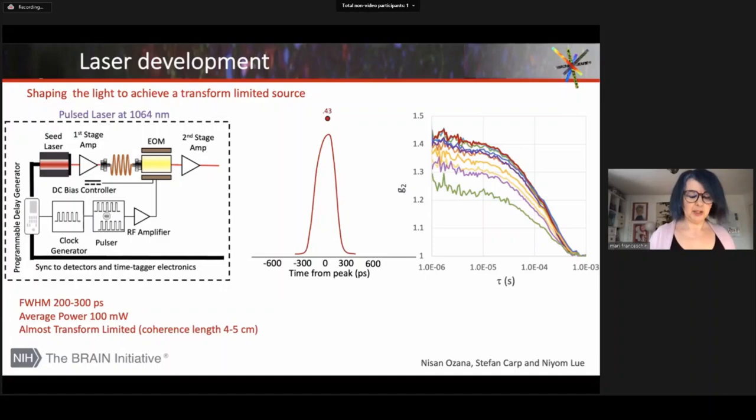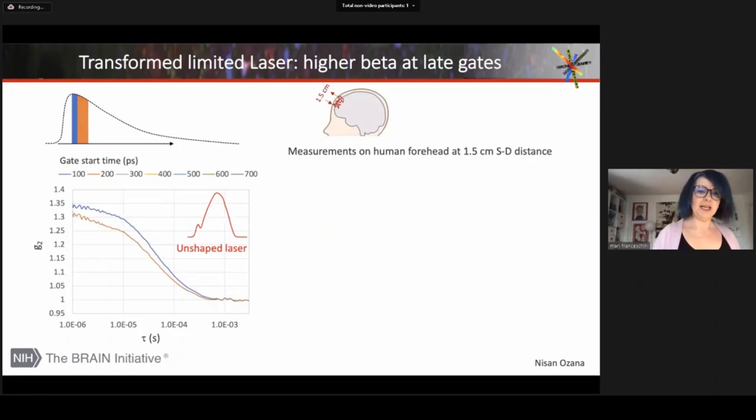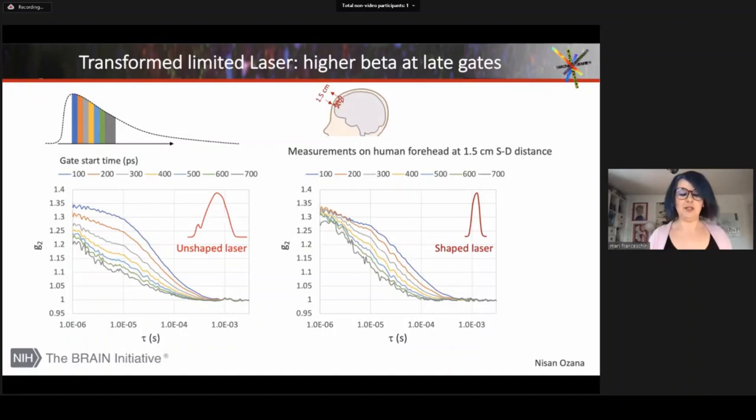Why I needed transform limited is because when I then go at late gates, if it is not transform limited, I mix coherent and incoherent light and I decrease my beta and also decrease the SNR. Instead, with the transform limited shape and more Gaussian, beta doesn't change with the time gate and I get higher beta at the late gate that I want to measure.